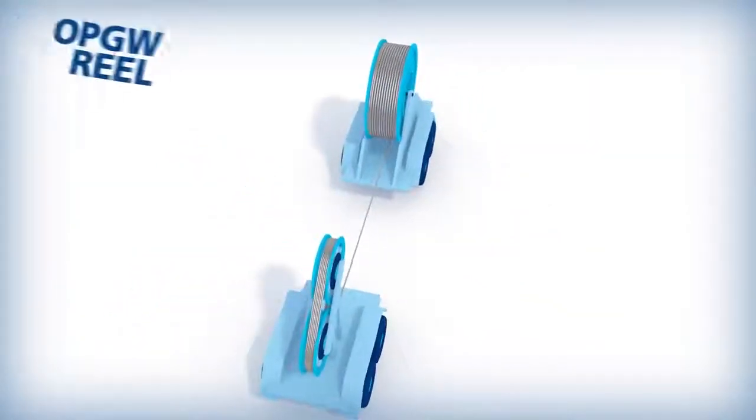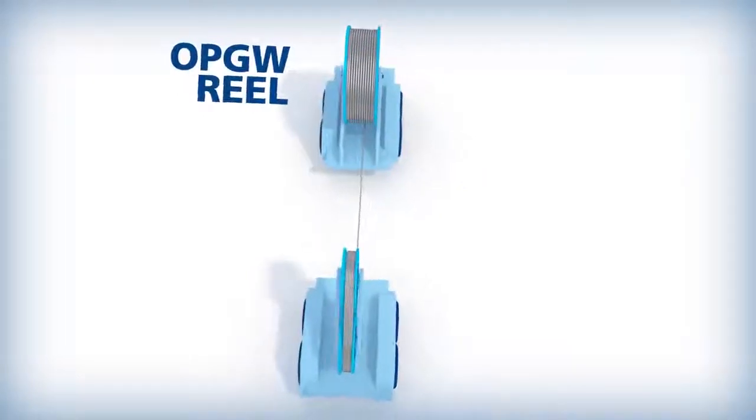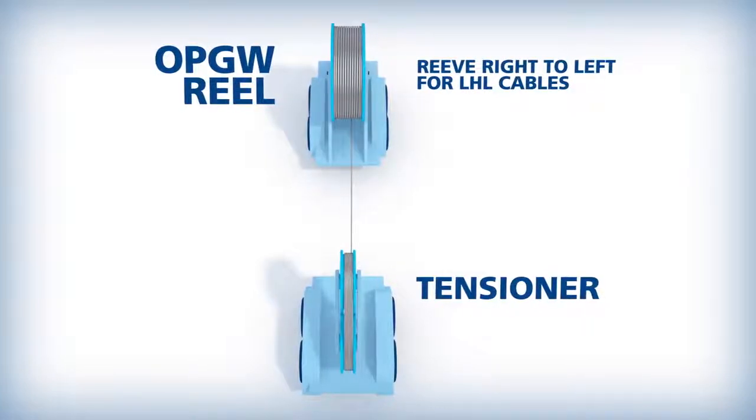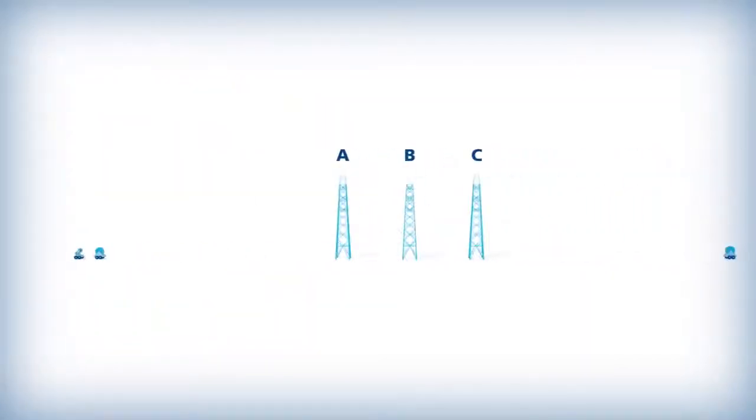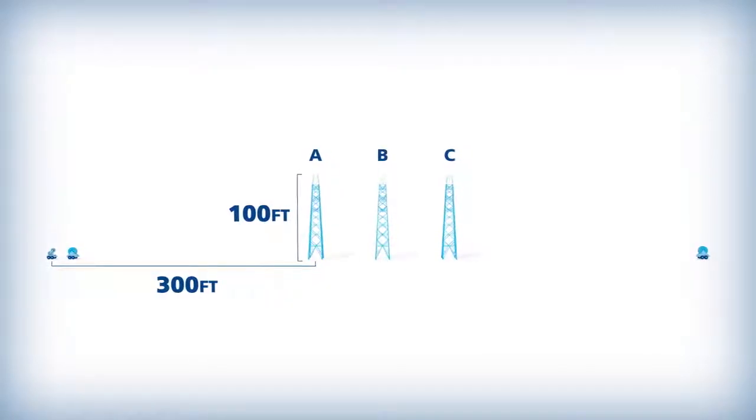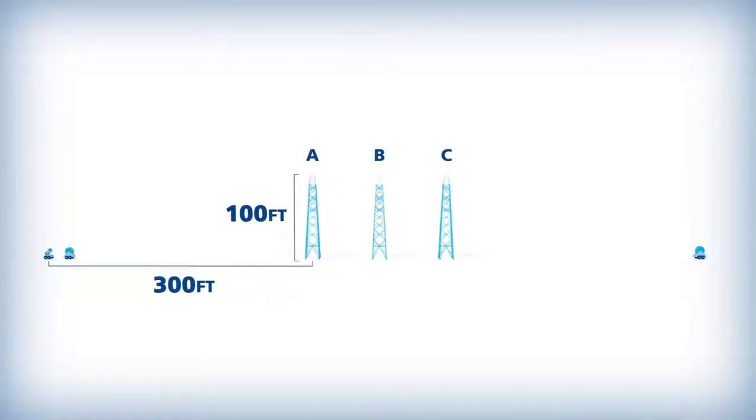The OPGW reel should be placed directly in line with the tensioner, and the OPGW should be reaved through the bullwheel properly. The tensioner should be located at a 3 to 1 ratio to the stringing block on the first structure and also be in line with the first two structures.